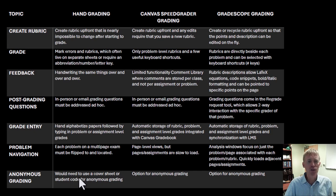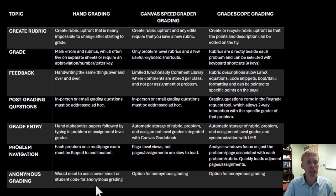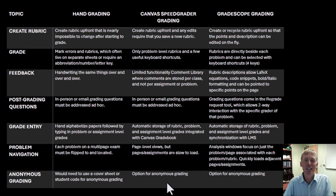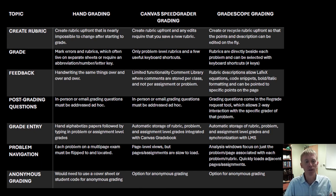Anonymous grading — if you use that, with hand grading you'd need a cover sheet or student code. Both Canvas SpeedGrader and Gradescope do offer anonymous grading. I haven't used either one, so I don't have many comments on those. Now let's move to a bullet-point summary of all the things I think are really great about Gradescope.